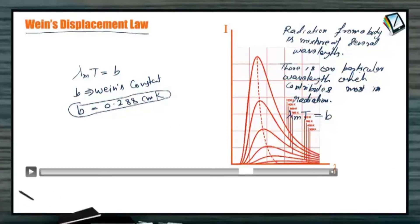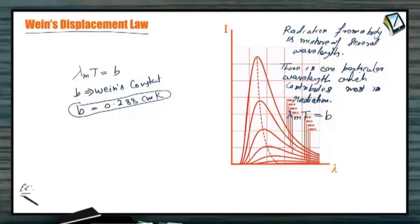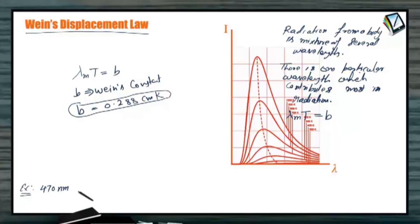Consider one example for Wien's displacement law: light from the sun is found to have maximum intensity near the wavelength of 470 nanometers. That means if we analyze the light coming from the sun, then the wavelength with maximum contribution to the total intensity is 470 nanometers. Assuming that the surface of the sun emits as a black body, calculate the temperature of the surface of the sun.